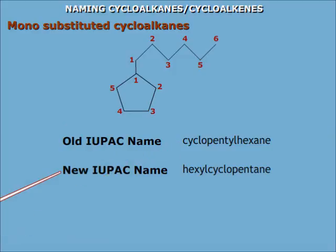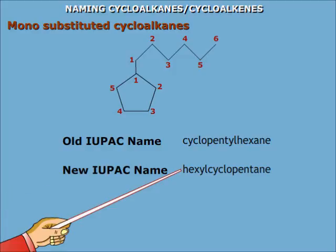However, according to new IUPAC rules, the cycloalkane is always given the priority of being the parent chain, even if it has a lesser number of carbon atoms. So according to the new rules, the compound is named hexylcyclopentane.